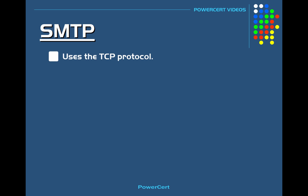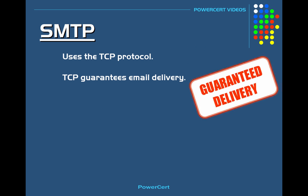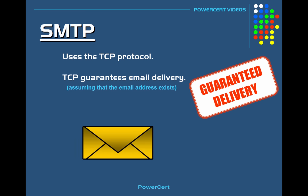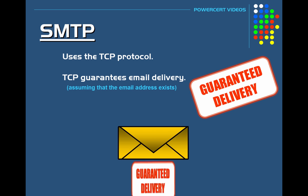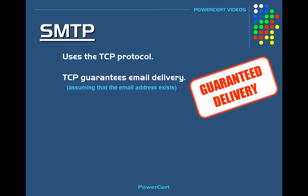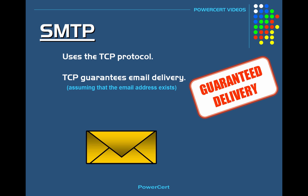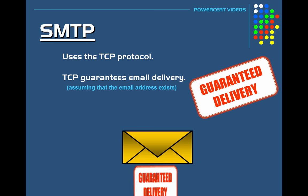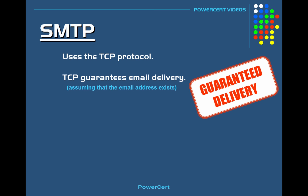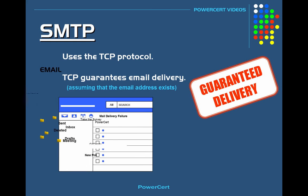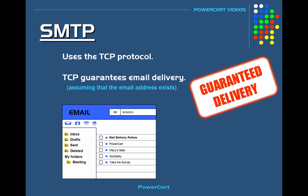SMTP uses the TCP protocol. TCP is a connection-oriented protocol and it guarantees the delivery of the email, assuming the destination email address is correct and still exists. But if the email does not reach its destination — for example, maybe you misspelled the email address or the email address no longer exists — you'll get that familiar mail delivery error in your mailbox informing you that the email you sent failed.